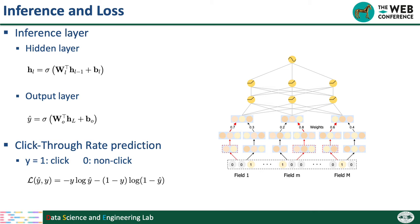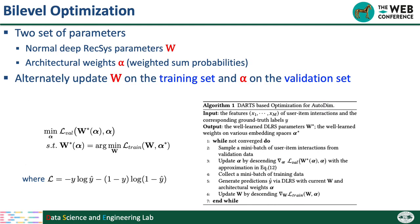In this model, we have two sets of parameters: the normal recommendation system parameters w and the weighted sum probabilities alpha. We jointly update them by solving a bi-level optimization problem. We alternately update w on the training set and update alpha on the validation set. This alternate training method prevents the model from selecting embedding dimensions that overfit the training data.